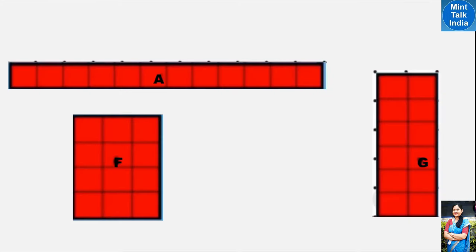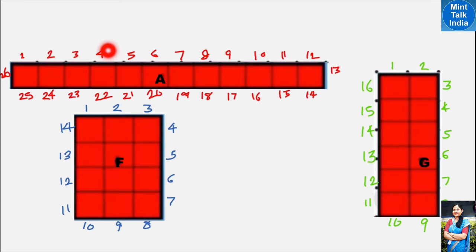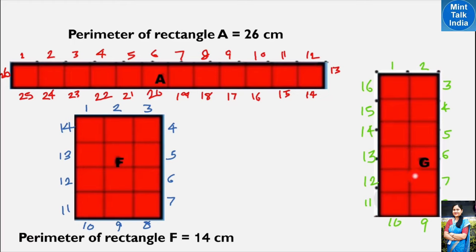Let's find out how the perimeter is different. One side of the red square is one centimeter, and all sides are one centimeter. When we add up all the sides of rectangle A, we get 26 — so the perimeter of rectangle A is 26 centimeters. In the same way, rectangle B has a perimeter of 14 centimeters, and rectangle G has a perimeter of 16 centimeters.